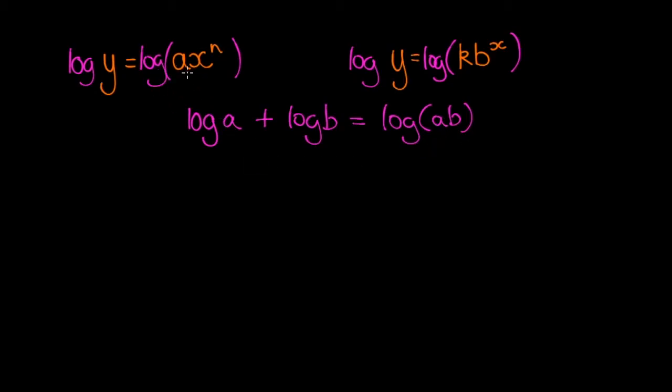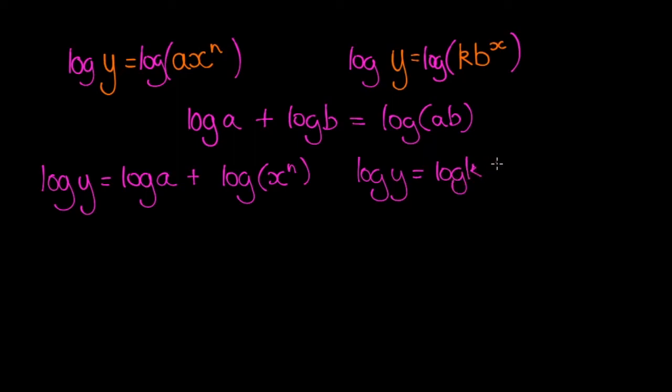So log ax to the n is equal to log a plus log x to the n. And for this one here, we've got log y is equal to log k plus log b to the x. We've just used one log law here, log a plus log b equals log ab.